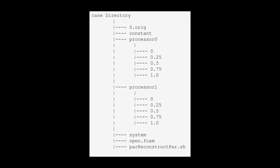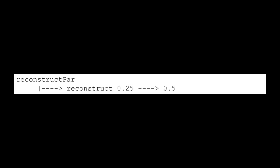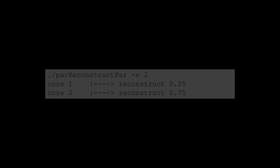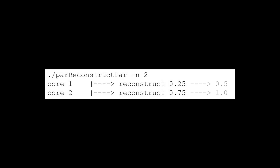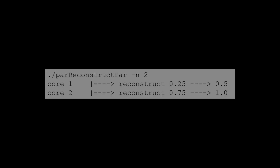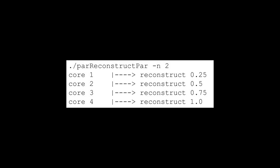Let's imagine we just ran a simulation on two cores and saved four time steps. Your case directory should look something like this. Now if we run reconstructPar, it will reconstruct in the following serial fashion. With reconstructParParallel, we could run on two cores, and we could run it on four cores.